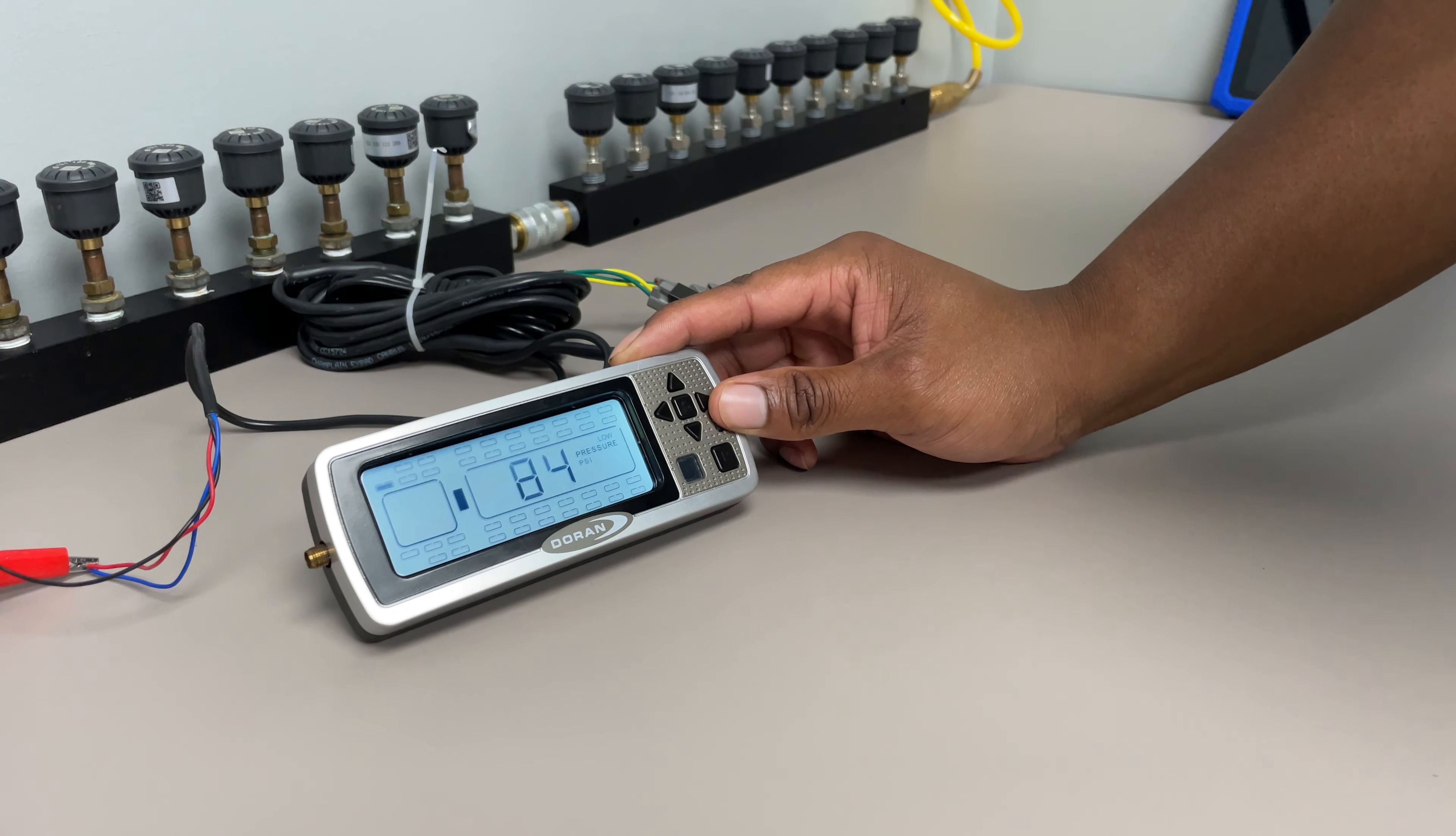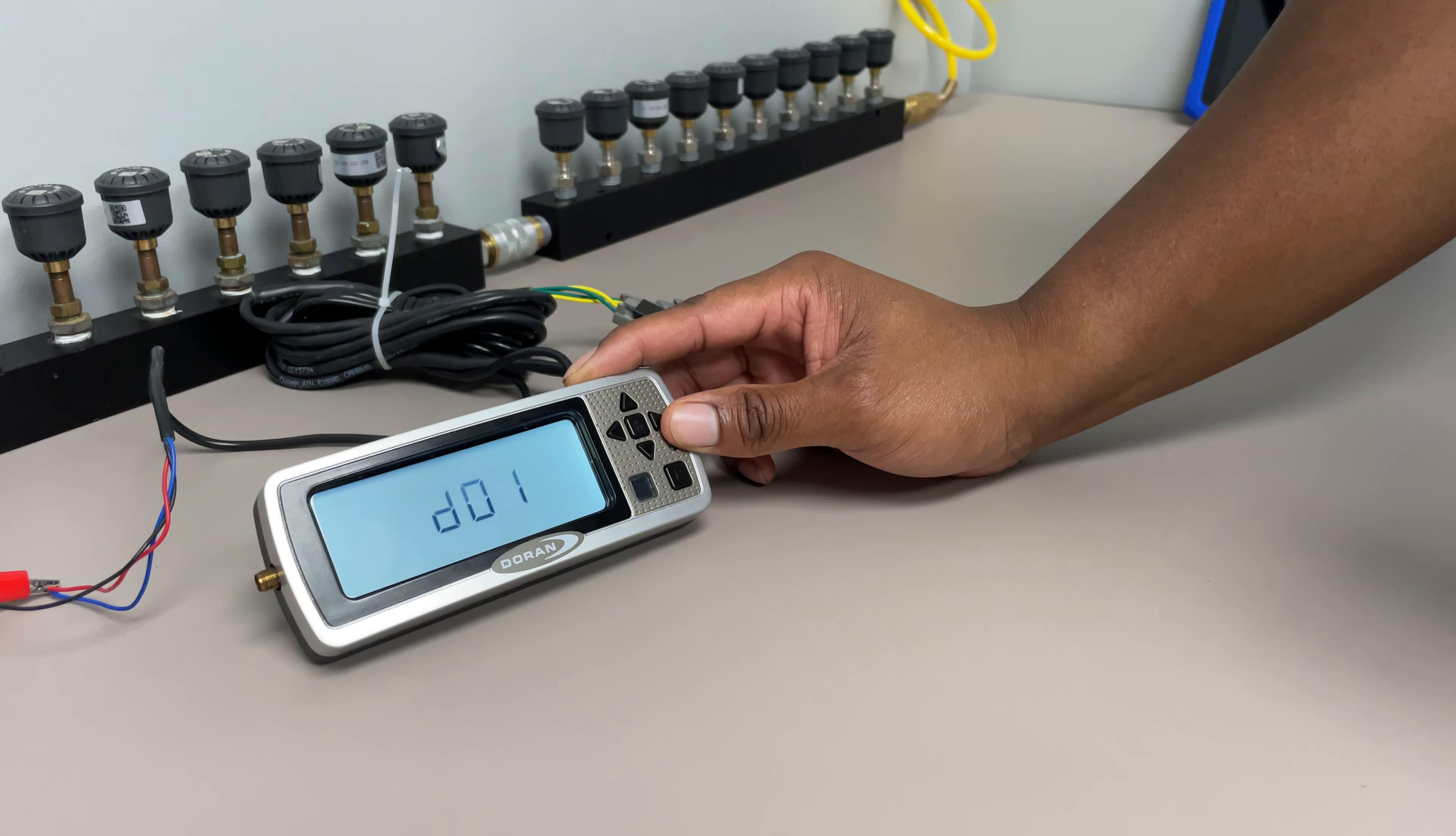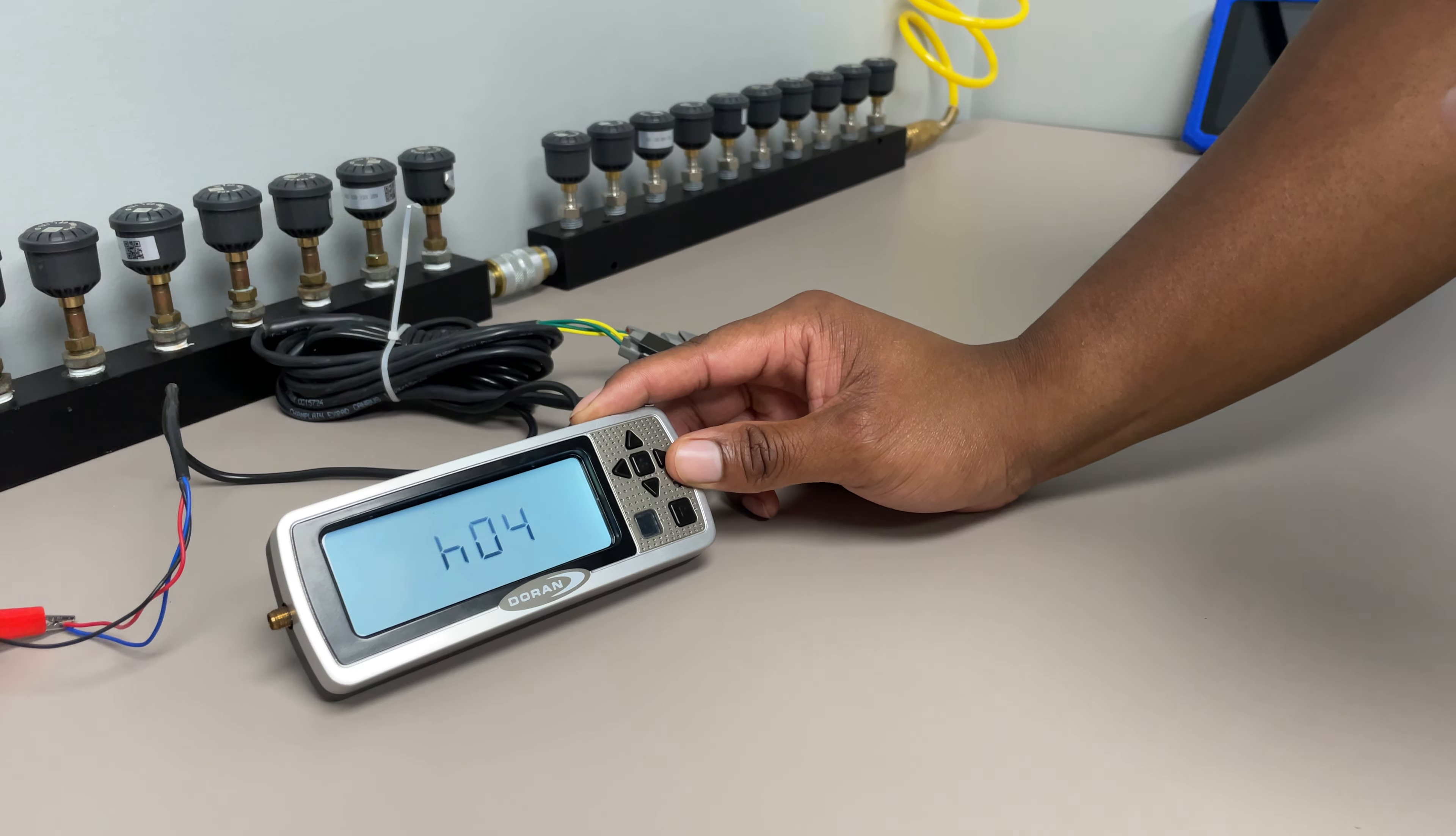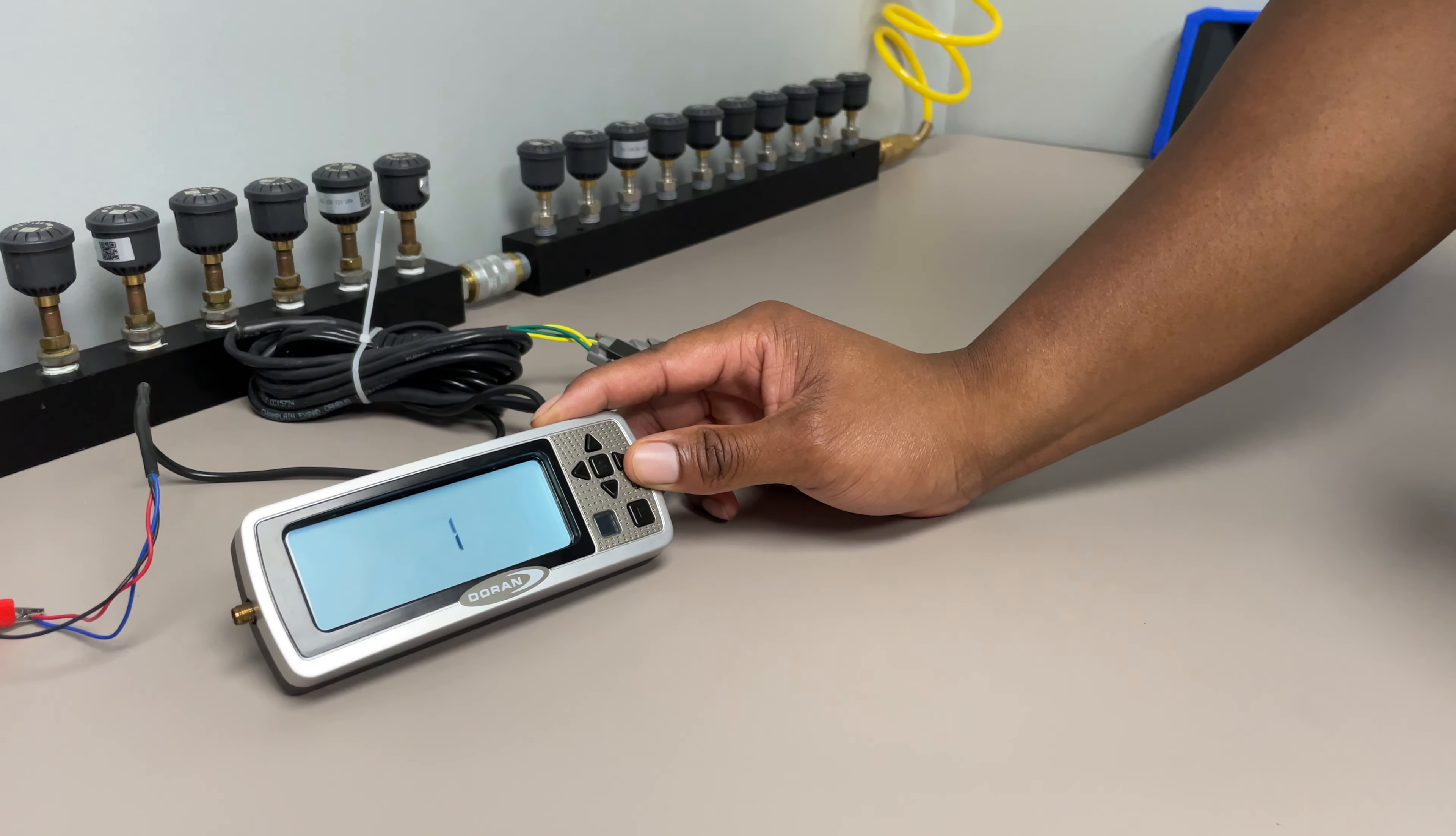It'll point you to the exact tire position and also give you what happened. So that'd be the month, the day, the year, the hour, the minute, and then it'll go to the next alarm.